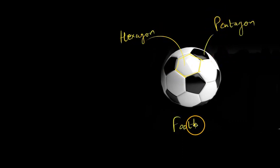See this white shape and it's a hexagon, right? Has six sides and a black one is a pentagon. So in football, you can spot both hexagon and pentagon.